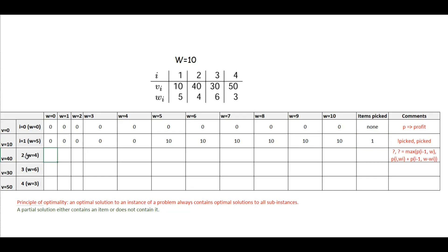Now we pick the second item whose weight value is 4. We won't be getting any profit until we reach at least 4. Here we need to apply the principle of optimality, which says whether to pick an item or not. If we do not pick this item, our profit would be the previous solution, which is 0. If we pick up this item, the profit would be 40, and we also need to add the profit from the remaining weight. The remaining weight is the limit minus the weight of this item, which is 4 minus 4. So the answer is 40.